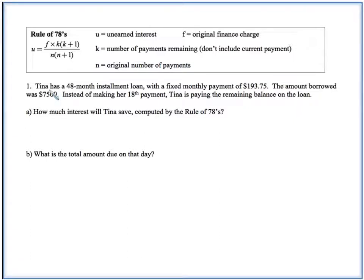In this example, it says Tina has a 48-month loan with a fixed monthly payment of $193.75. The amount borrowed was $7,500, and instead of making her 18th payment, Tina is paying the remaining balance on the loan. For whatever reason, she's able to pay it all off on the 18th payment. So the first question is, how much interest will Tina save computed by the rule of 78s?